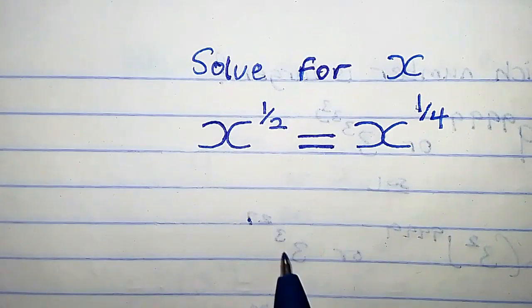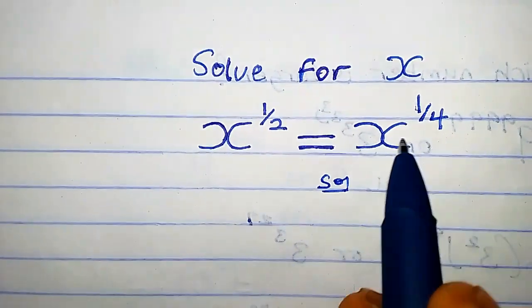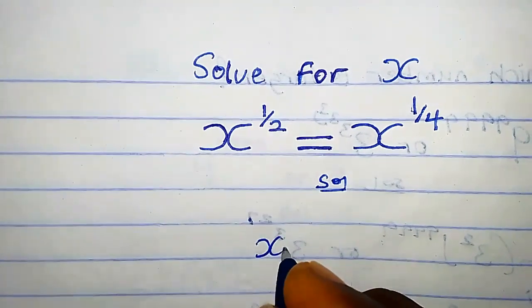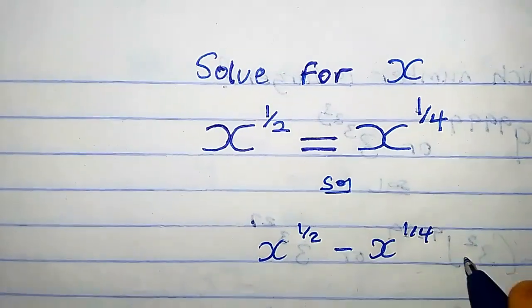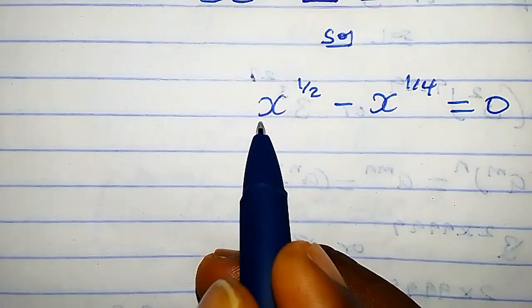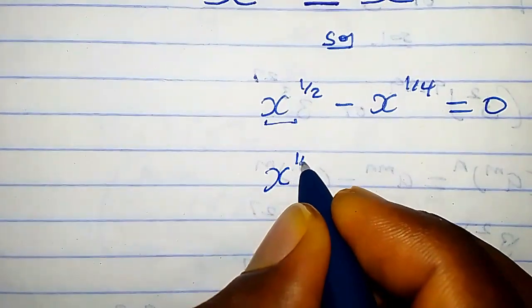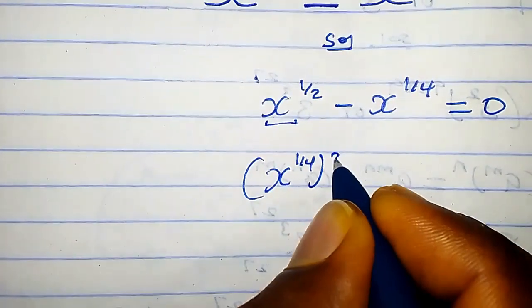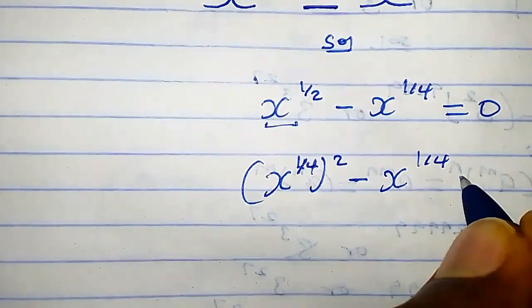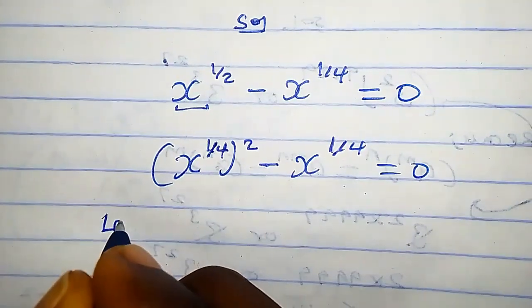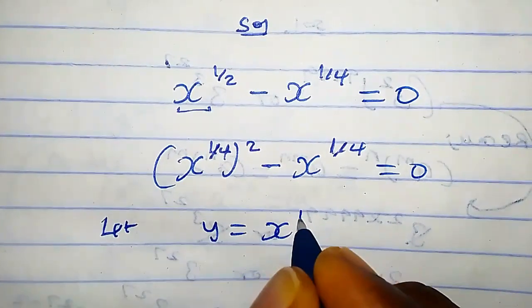How do we solve for x in this equation? We're going to have x raised to the power one-half minus x raised to the power one over four equals zero. We can write this as x raised to the power one over four times two, minus x raised to the power one over four equals zero. Now let y equal x raised to the power one over four.